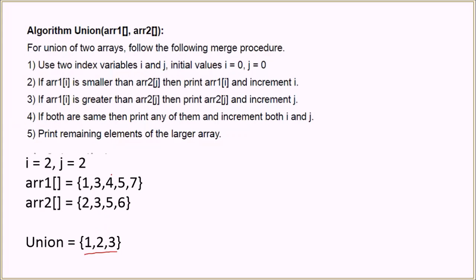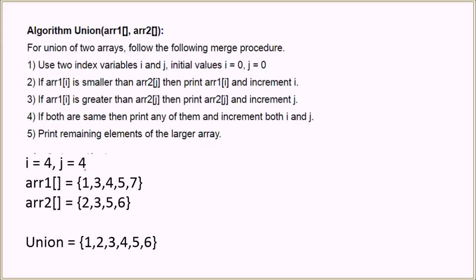The union array so far is 1, 2, 3. Next we compare 4 with 5 — 4 is smaller, so we increment i and put 4 in the union. Now i=3 and j=2; both elements are 5, which are equal, so we put 5 in the union and increment both i and j. Then we compare 7 with 6 — 6 is smaller, so we put 6 in the union and increment j. Array 2 is now exhausted, so we insert the remaining elements of array 1 into the union.